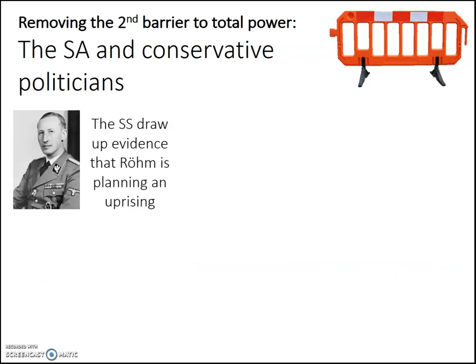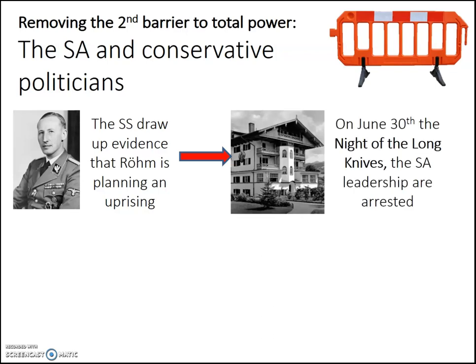Hitler realised that Rohm and the SA were a threat to his power, so he asked the SS to draw up evidence that Rohm was planning an uprising. This man, Reinhard Heydrich — not a very pleasant man in any way — was a member of the SS, and he started producing evidence that Rohm was planning an uprising. It was completely faked, but it was the evidence that Hitler needed.